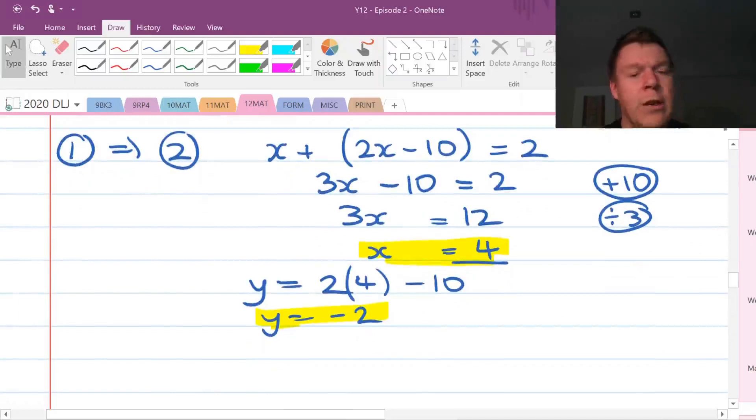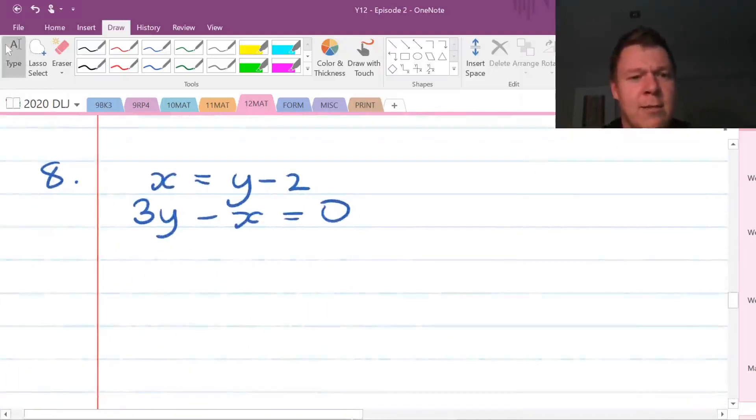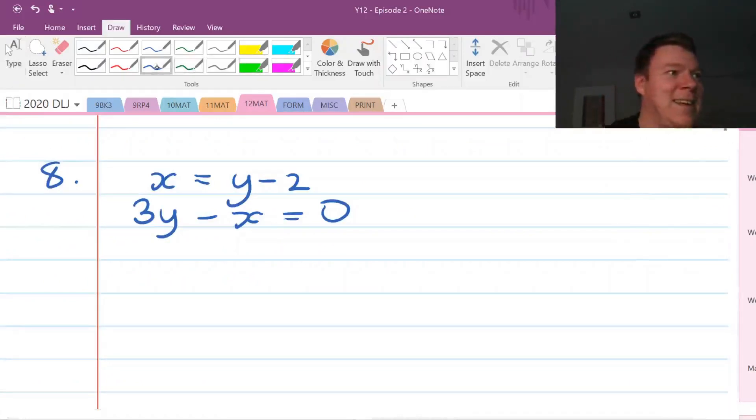Well, we're not actually done, we've still got to figure out what y is. I always like to just use the one that's been rearranged for y. When you've got an equation rearranged for y you may as well use it, it'll get you straight there. So we're just putting 4 in where there was an x in our original equation 2x minus 10. So y is going to be 2 times 4 is 8 minus 10 makes minus 2. So we get our final answers of y equals minus 2, x equals 4.